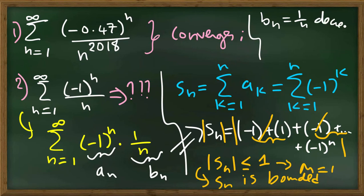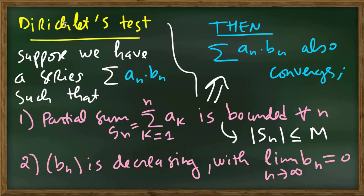So this is definitely decreasing. The limit of b_n is 1 over n. Therefore, this series converges by Dirichlet test.